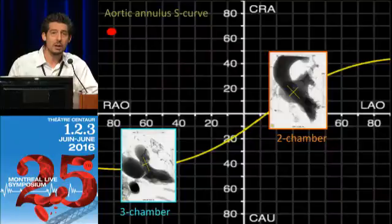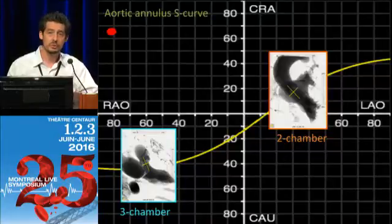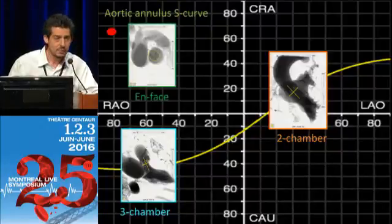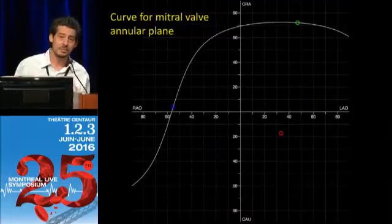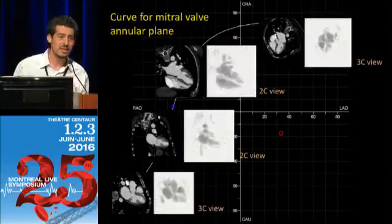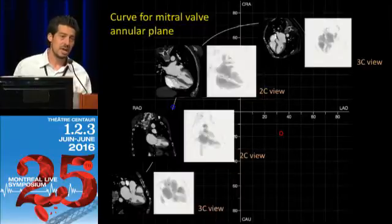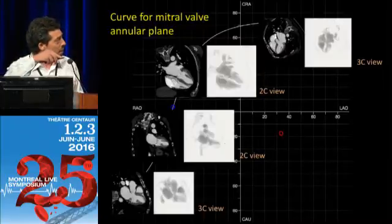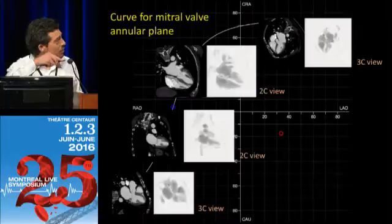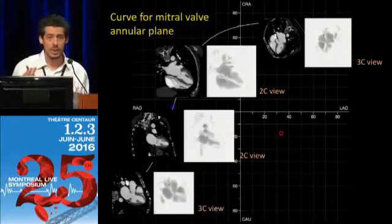If you come to the RAO caudal view, you'll end up in a three-chamber view. So anytime your C-arm goes into an RAO caudal view you are in a three-chamber view, and anytime you go into a shallow LAO cranial view you're in a two-chamber view. To obtain the on-face view of the aortic valve, it's typically in an extreme RAO cranial view. For the mitral valve, you have an S-curve as well — for every RAO and LAO there's a corresponding cranial and caudal where the mitral valve is in-plane. Going extremely RAO caudal gives you the mitral valve in-plane in a three-chamber view, and coming up towards shallow LAO gives you a two-chamber view.